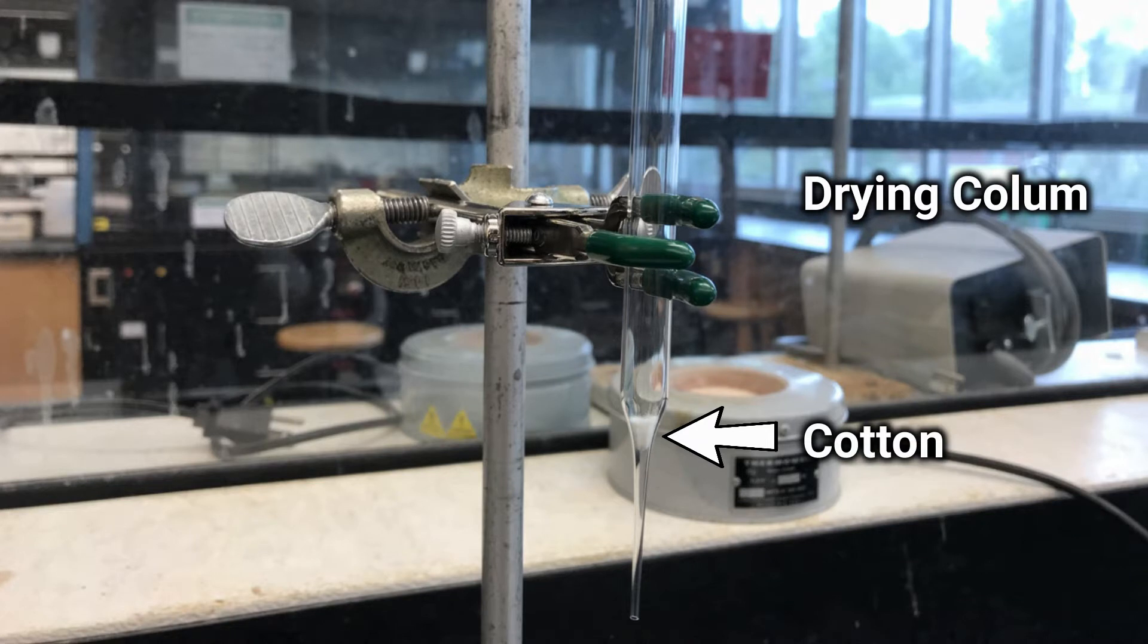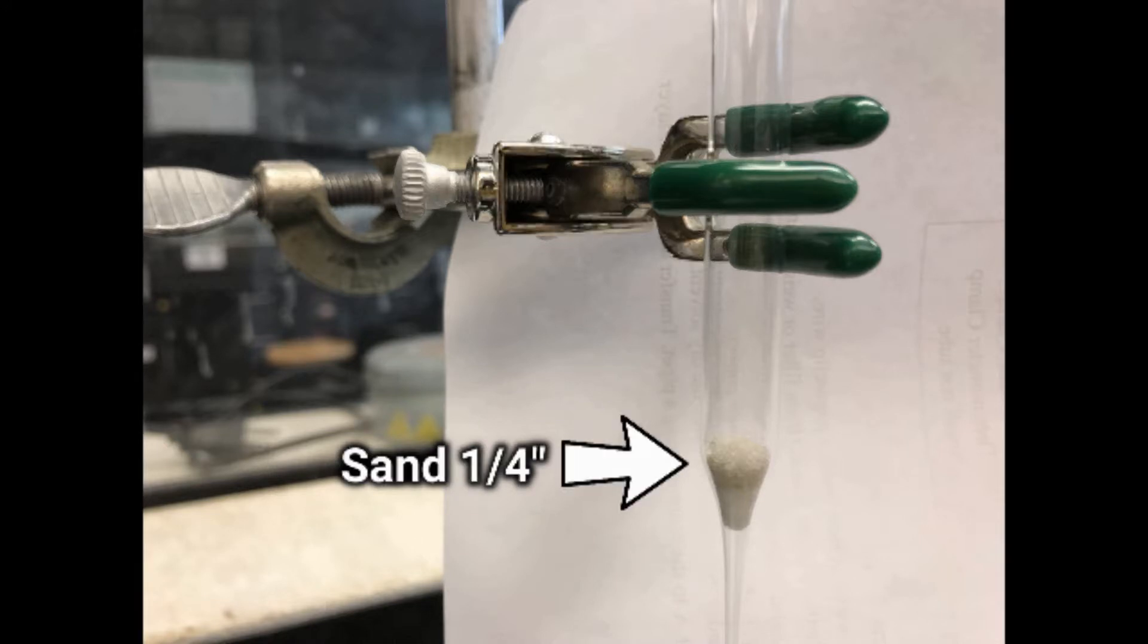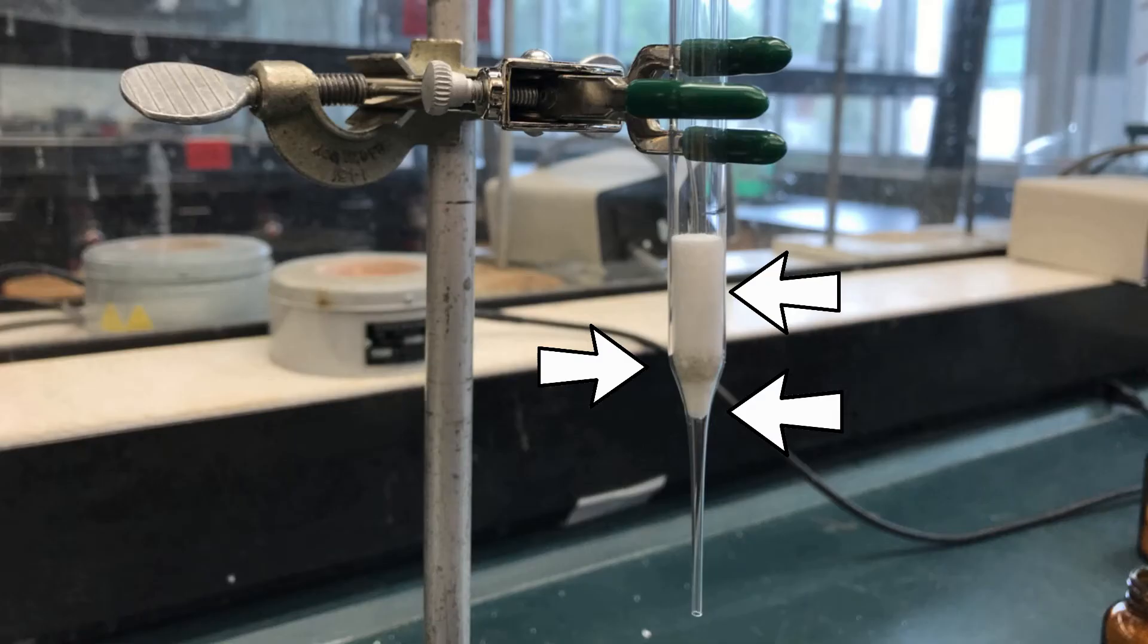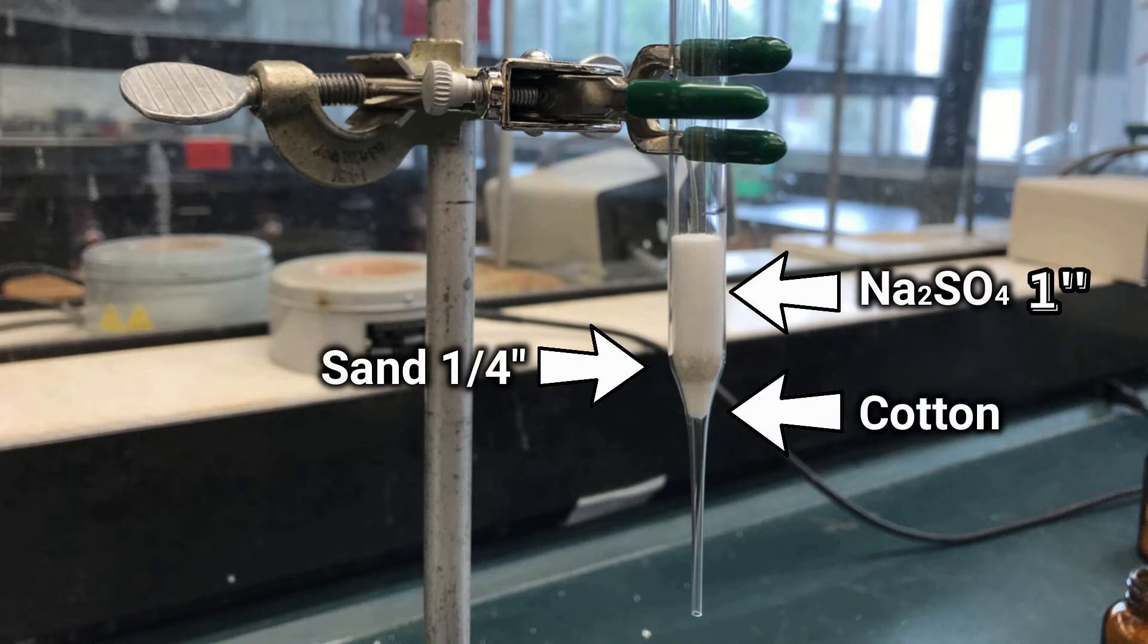Place a small piece of cotton at the end of the pipette. Use a paper clip to push it to the bottom. Next, add about a quarter inch of sand. Make sure to keep the sand level, followed by 1 inch of sodium sulfate.